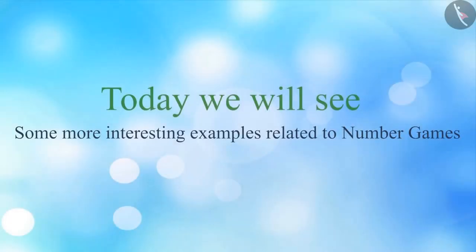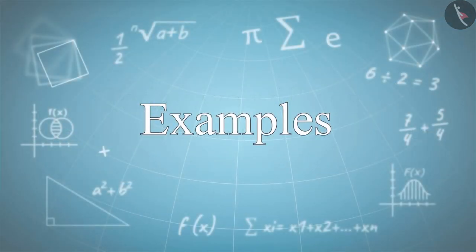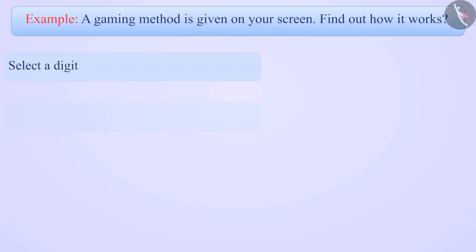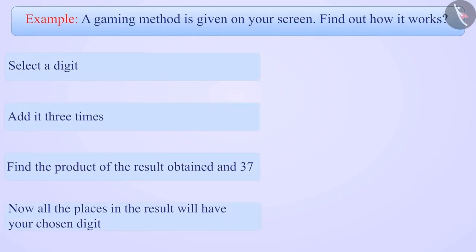Today, we will see some more examples related to number games. Below is the method of a game. Find out how it works. Select a digit, add it three times, multiply the result obtained with 37. Now in all the places in the result, you will have your chosen digit.